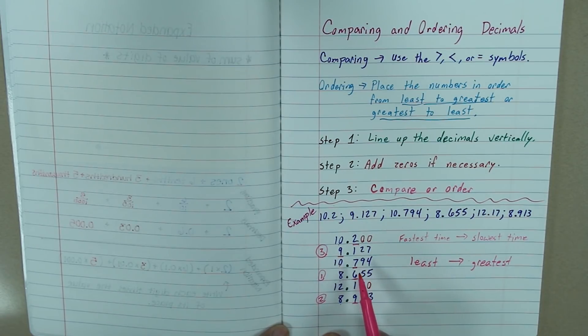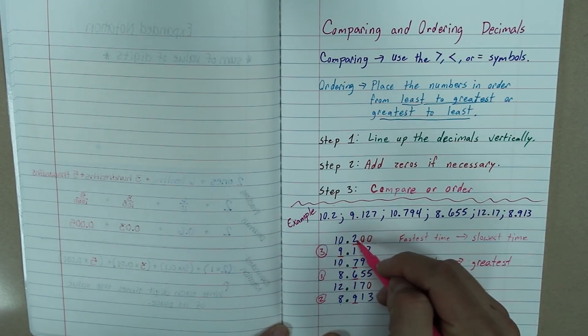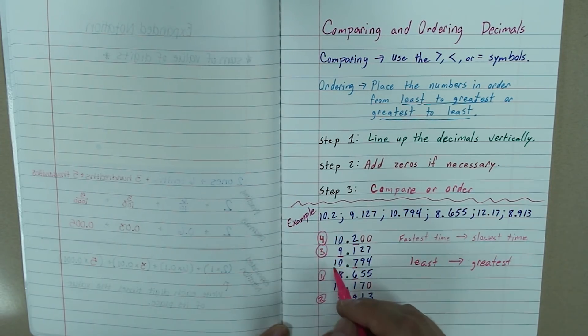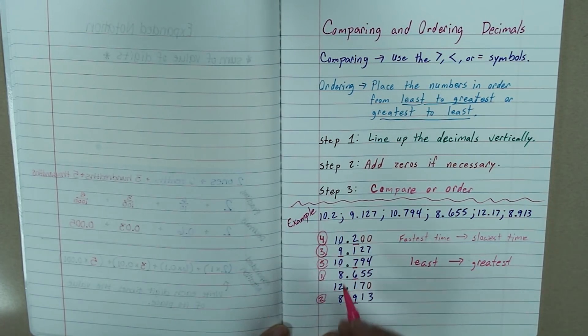But sometimes we can get confused without these zeros. If we have those zeros not there, we can sometimes get confused by that place value. So, since this one is smaller, I am going to make this one four. This one becomes five, which leaves the twelve, which is larger than all of them, to be six.